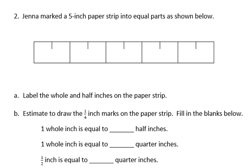So it says, Jenna marked a 5-inch paper strip into equal parts as shown below. We're to label the whole and half inches on the paper strip. So I'm going to start by showing the wholes. So we'll start with 0 on the end.